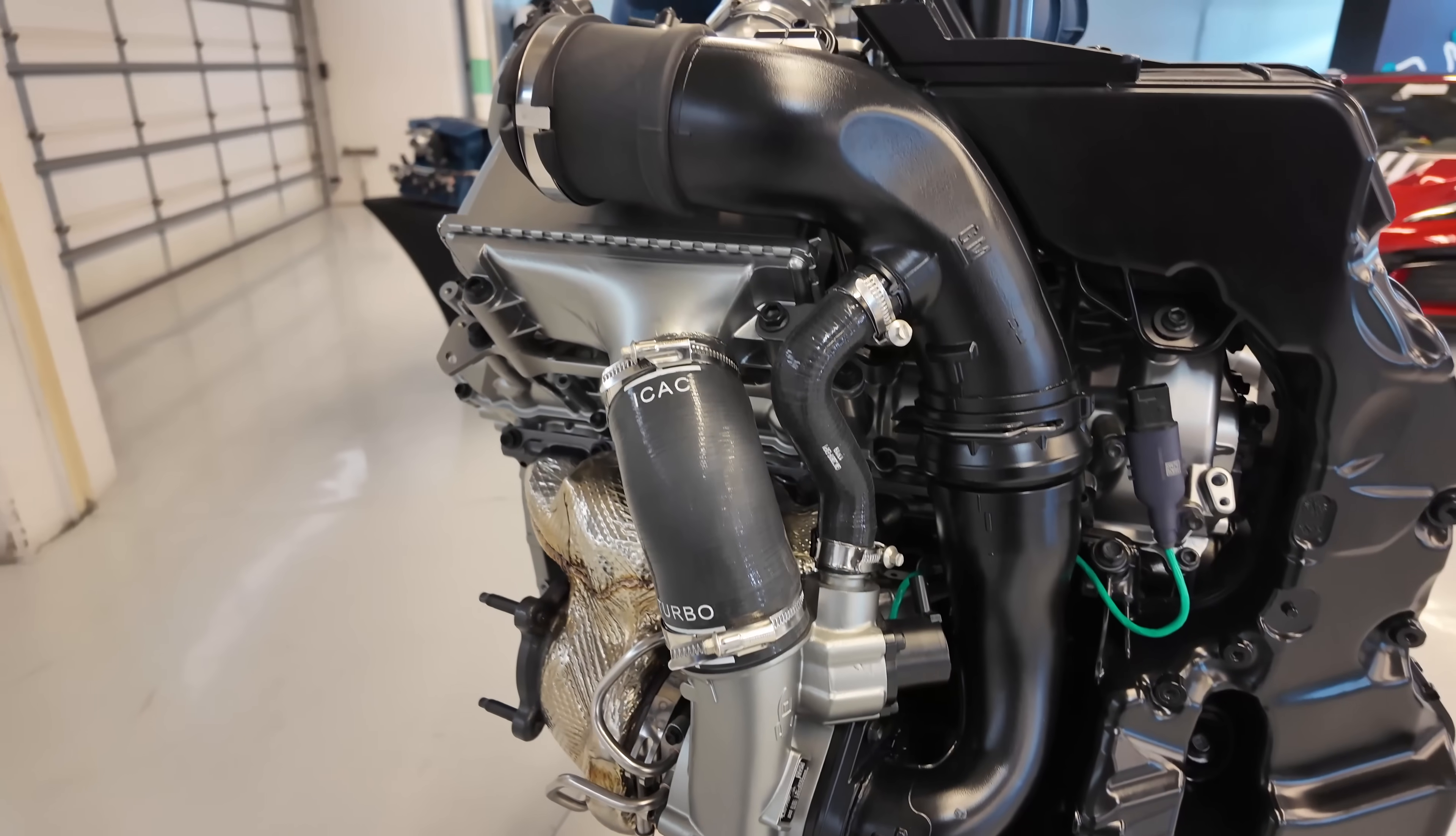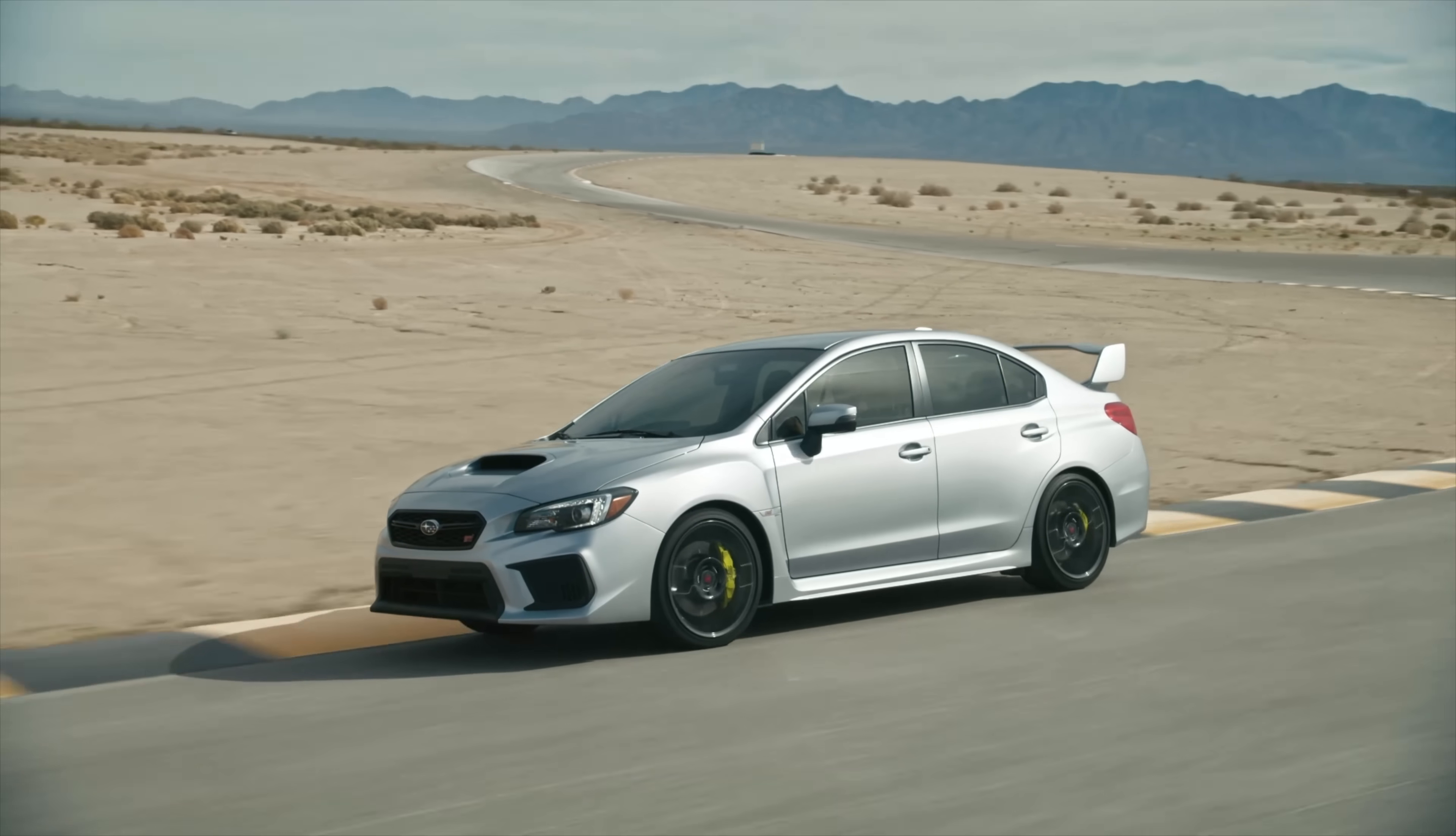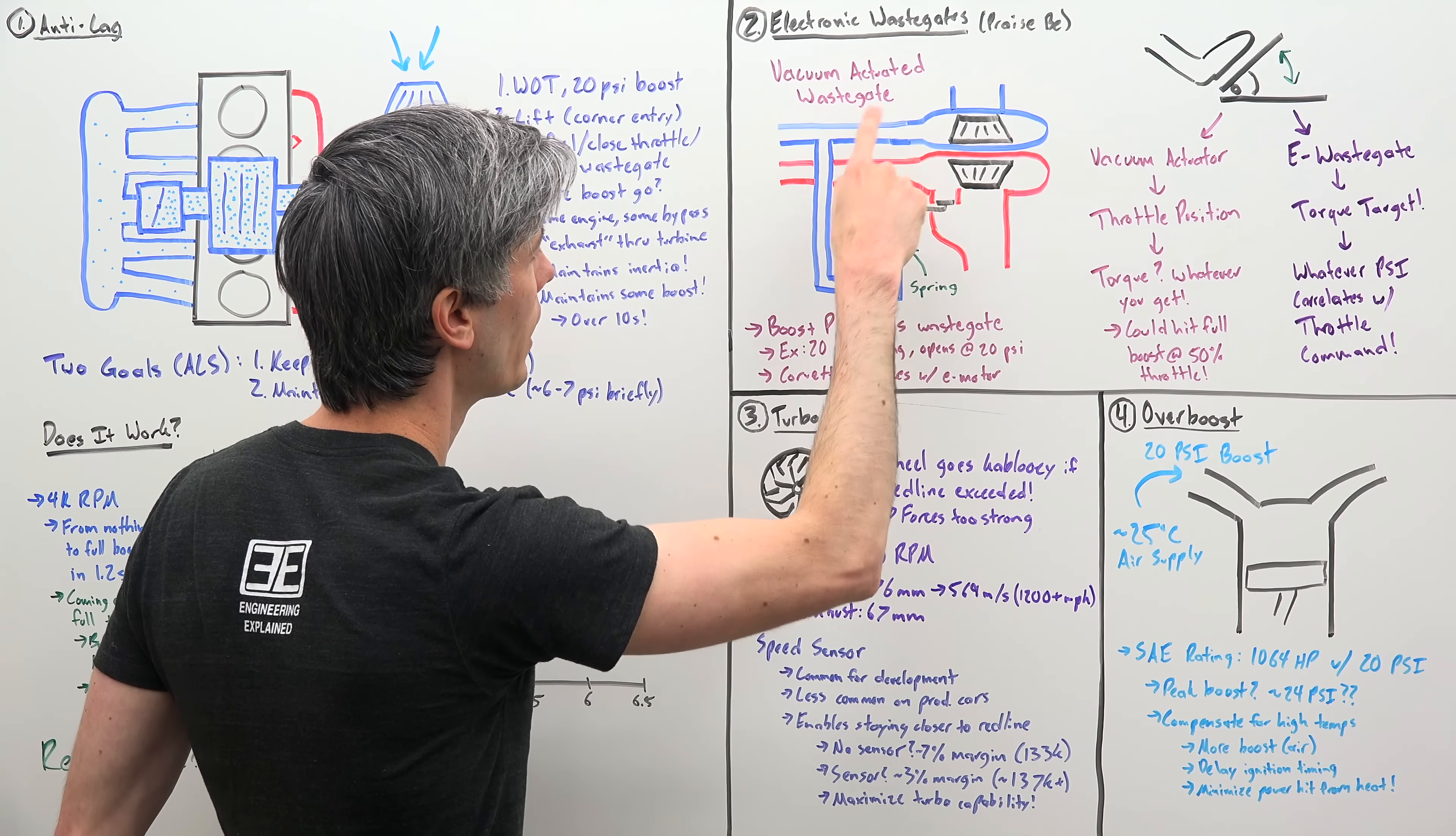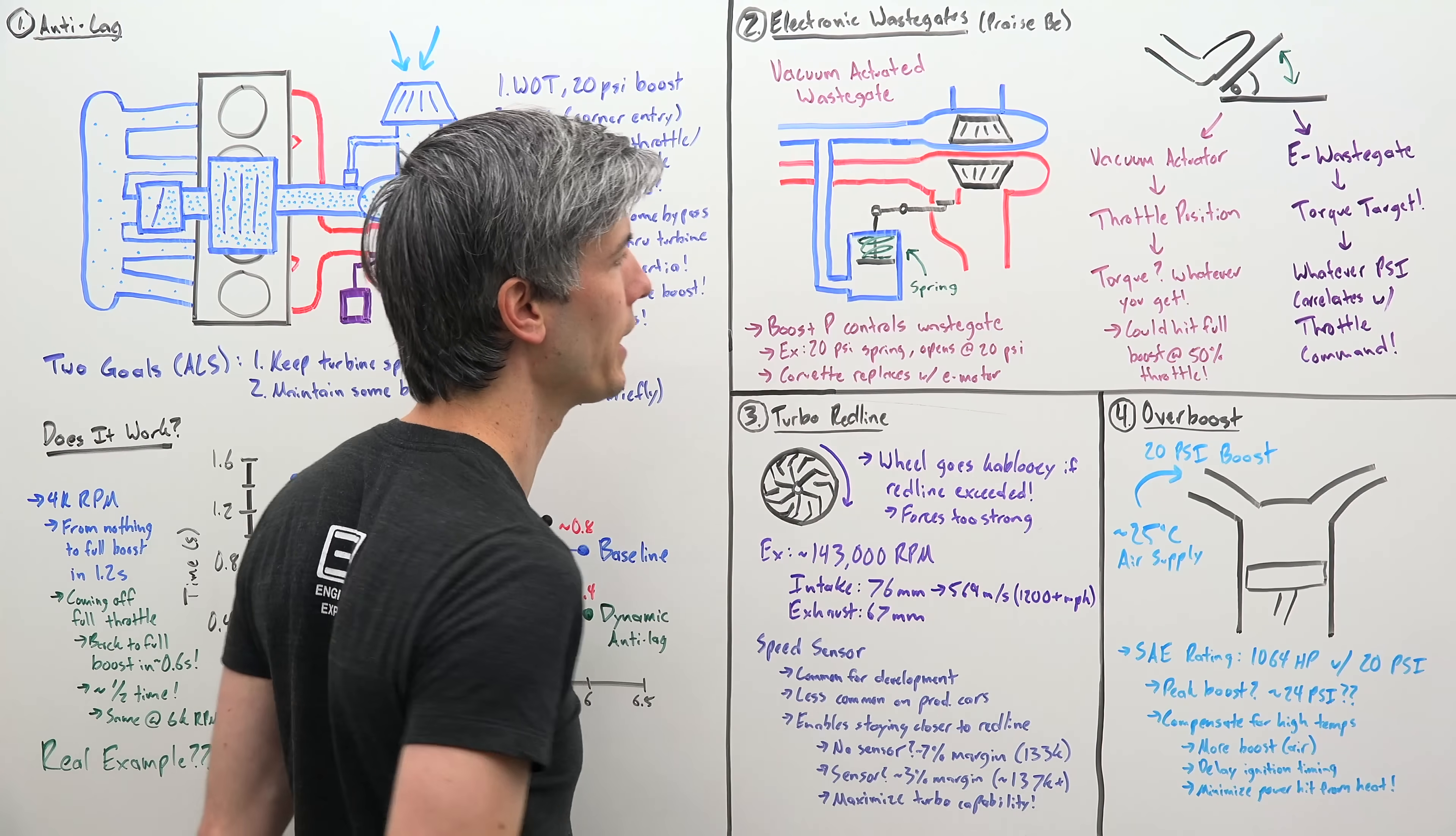So traditionally in turbocharged cars, in order to regulate how much boost they create, they use vacuum actuated wastegates. How does this work? It's very simple. So here we have our turbocharger. You have your air coming in through the compressor side of that turbo, and some of that air is routed with a vacuum line to your wastegate. Now once the pressure gets to a certain point, it's going to press this spring in.